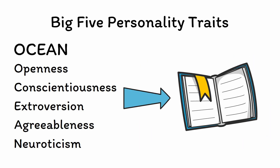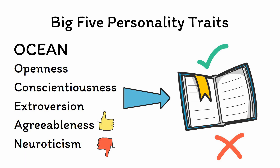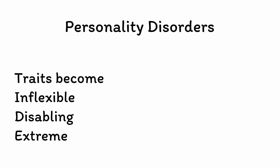So how do we get from the personality traits in the OCEAN acronym to the specific personality disorders listed in the DSM? It's initially tempting to think that it's the mere presence or absence of specific traits that's problematic. However, none of the OCEAN traits are inherently good or bad, and even seemingly positive attributes like agreeableness or conscientiousness can become problematic. Instead, personality disorders emerge when specific personality traits become inflexible, disabling, and extreme — and handily, these words form the acronym TIDE, which should be easy to link to the word ocean.